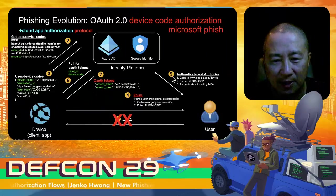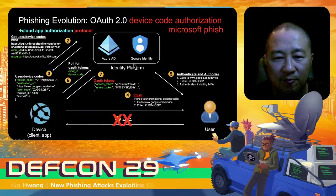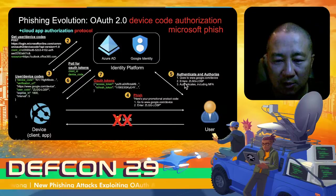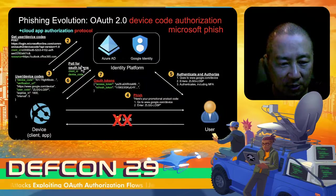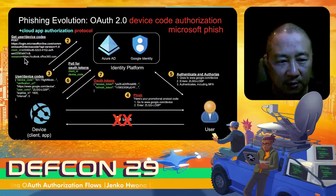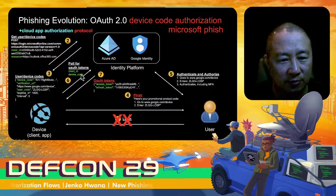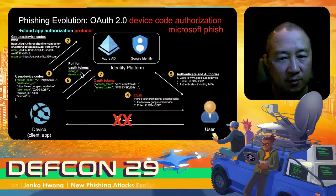We get back the device code (used later), the user code (given to the user), the login URL, and an expiration time — all included in the phish. If the user is convinced, they go and authenticate, enter the code, and go through authentication including MFA. Once they're done, the device is in the background polling and checking the identity platform, which will let it know once the user has finished logging in successfully. At that point OAuth tokens will be created and returned as part of this polling API call.